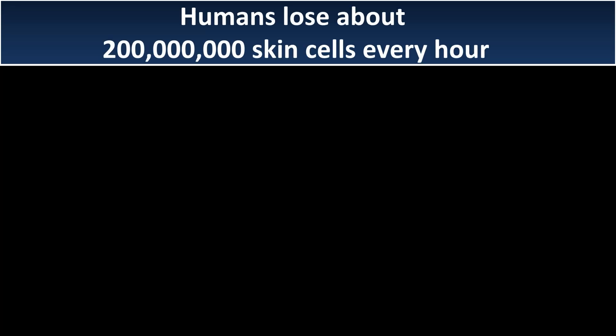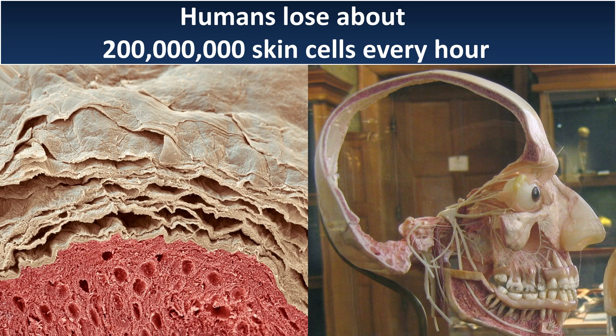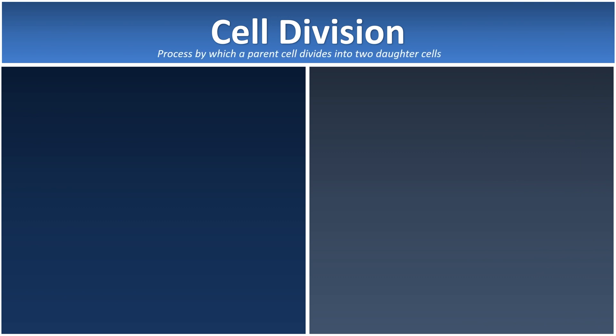Humans lose about 200 million skin cells every single hour. This is a picture of the skin cells that you might find on your bed. Since we lose so many skin cells every single hour, why don't we look like that? All thanks to cell divisions. Cell division is a process where a parent cell divides into two daughter cells, which helps us repair damaged cells and replace dead cells.